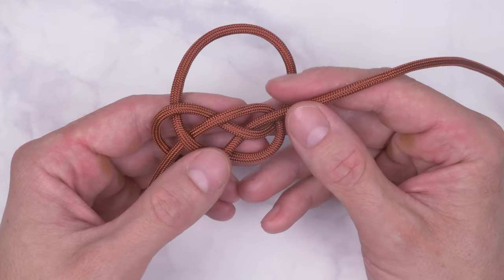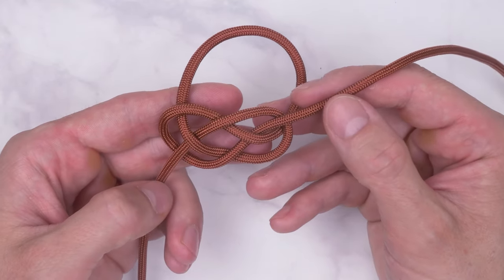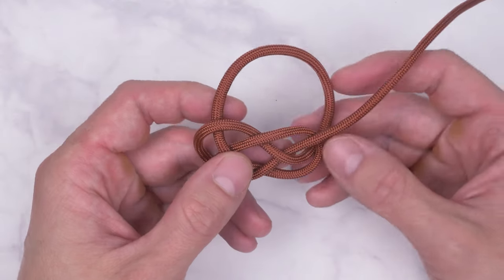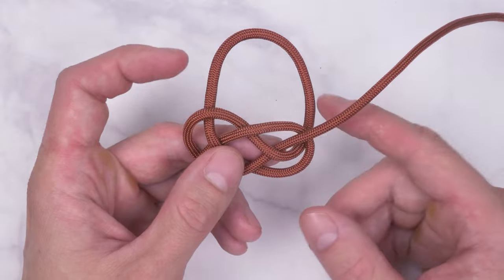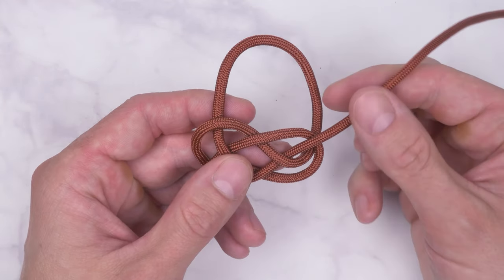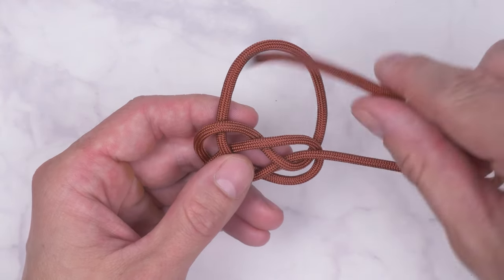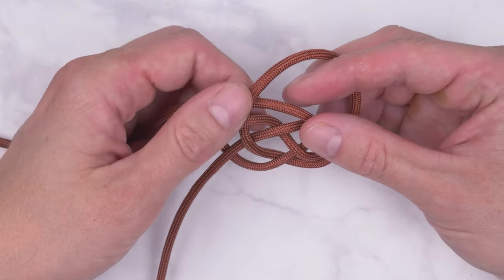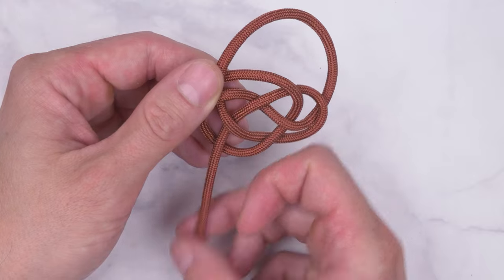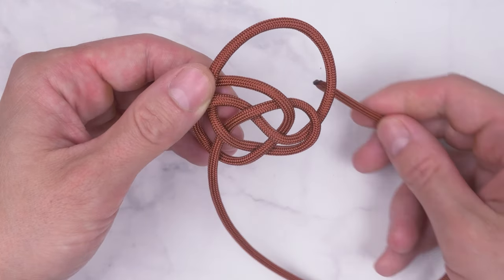We continue by passing our two ends under the two parts of our loop. So the top end under here. Bottom end under here.